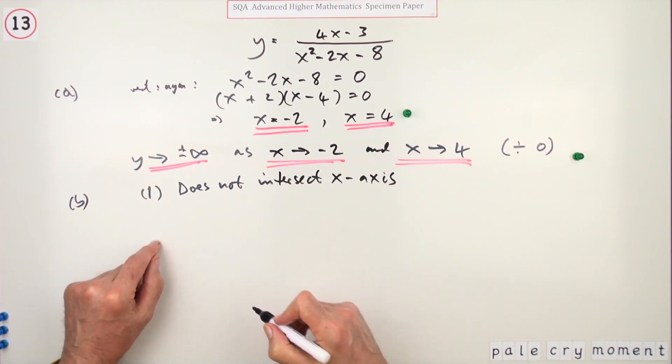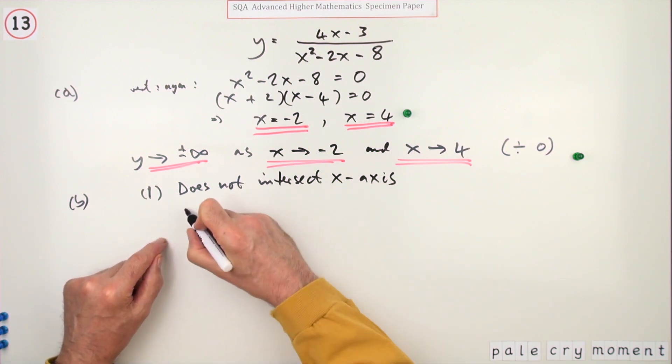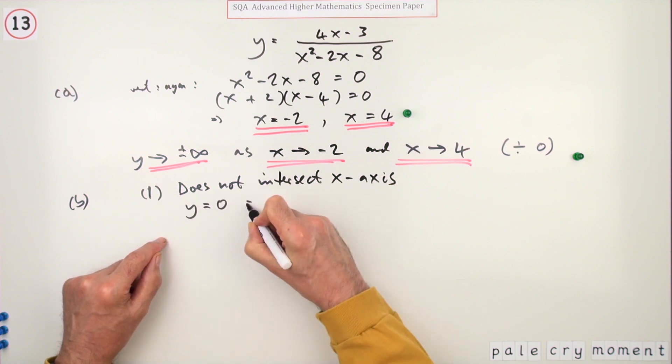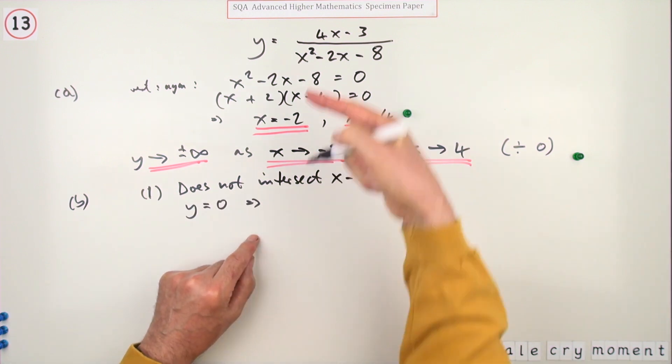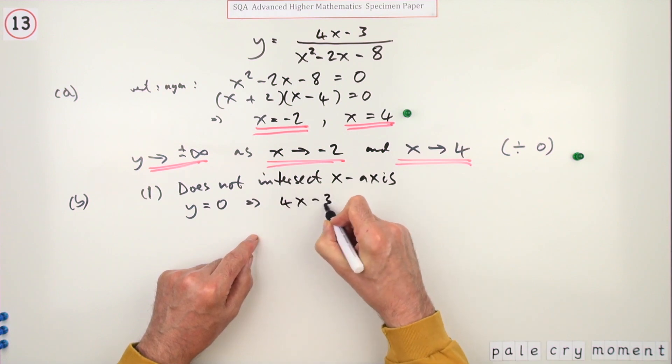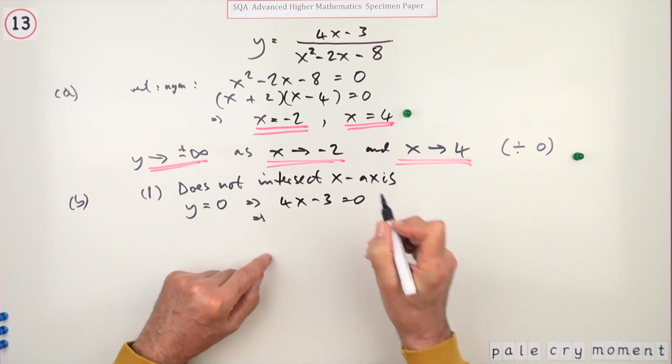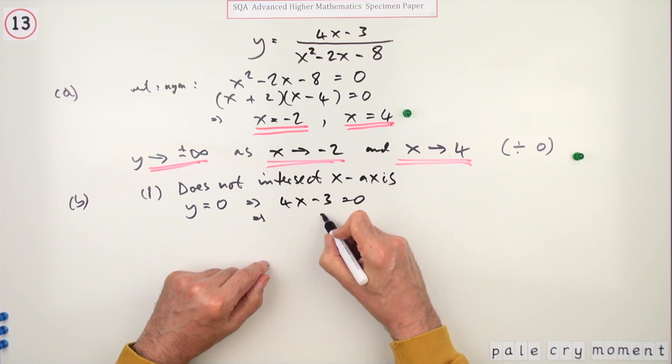Try and find the value of x for which that happens. So cross the x-axis means you're looking for y equals zero. And if y equals zero, it's sufficient for the numerator of that fraction to equal zero, which in fact gives you an answer. That gives the answer: x is equal to three quarters.